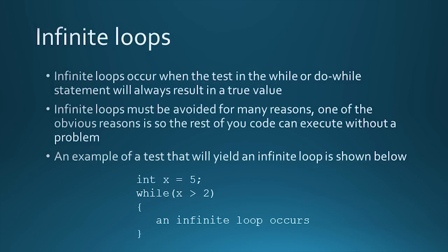Infinite loops can occur when a test in a while loop or a do-while loop will always be true. An infinite loop must always be avoided — one obvious reason is so that the rest of your code can execute. An example of an infinite loop is if you declare an int variable with the value of 5 and then test if that variable is greater than 2. Since 5 is always greater than 2, that loop will run indefinitely, or until you run out of memory.